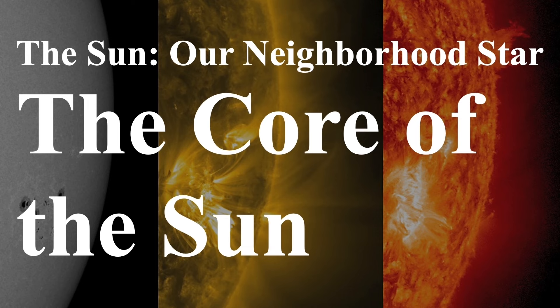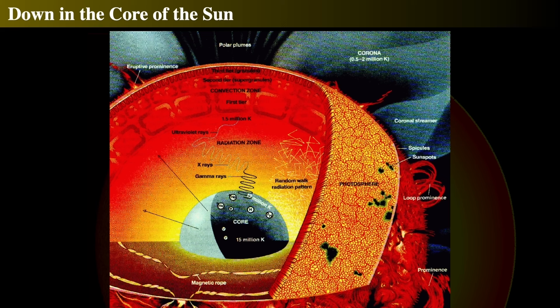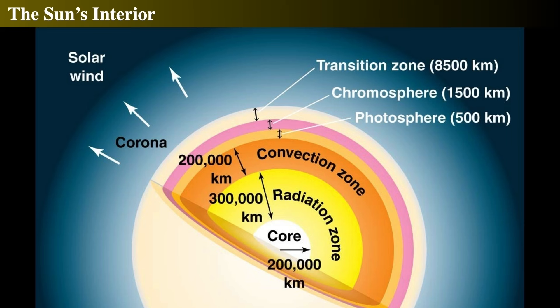Hello everyone, this is Jason Kendall. Welcome to the next of my introductory astronomy lectures. Last time we were talking about the surface features of the Sun. Now let's get down to the center of things, down into the core of the Sun. So what's way down in the core of the Sun? What are the conditions like in there? We see from this diagram that it can be very complicated, but below the photosphere and below the chromosphere, deep down in the Sun the conditions are really rather strange.